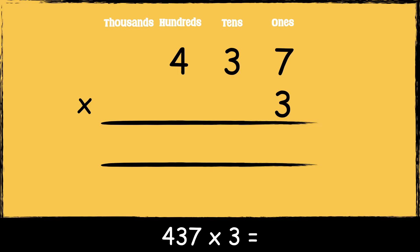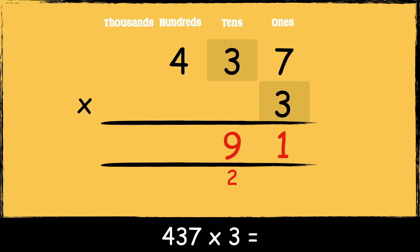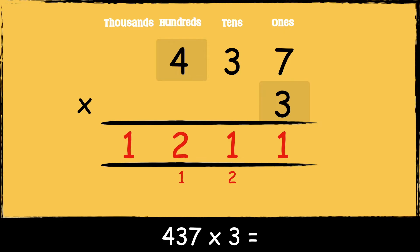Now that we're set up, we're ready to multiply. First we multiply three by seven: three times seven is 21. We carry the two below in the tens column as it represents two tens. Now we multiply three by three tens: three times three is nine, add the two tens gives eleven. We carry the one below in the hundreds column. Then three times four hundreds is twelve, add one is thirteen.